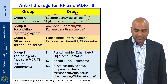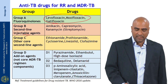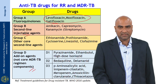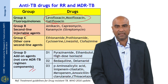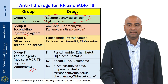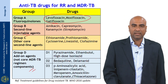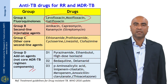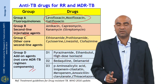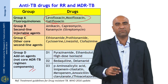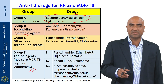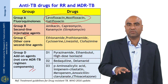In Group D are agents used as add-on agents — they are not core MDR-TB regimen components. There are three subclasses: D1 includes pyrazinamide, ethambutol, and high-dose INH; D2 includes bedaquiline and delamanid; and D3 includes para-aminosalicylic acid, imipenem-cilastatin combination, meropenem, and amoxicillin-clavulanic acid with thiacetazone. When formulating a regimen for MDR-TB, you usually choose drugs from different groups. I will confine my discussion to the adverse effects of these drugs.